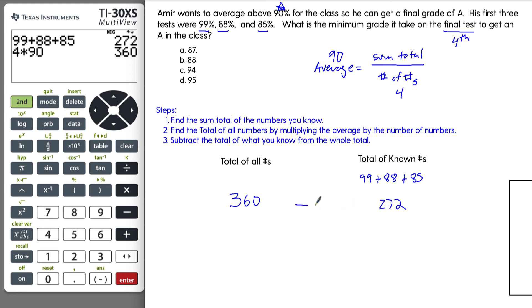So we have 360, put it in the calculator here, minus 272, equals an 88. So Amir is almost there. As long as Amir gets an 88 on the final test, he will get that 90.